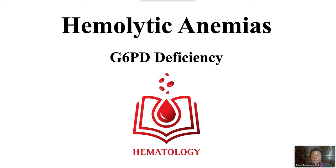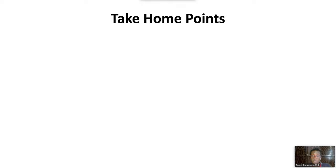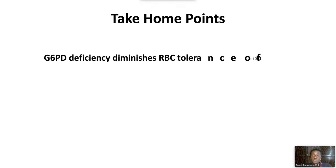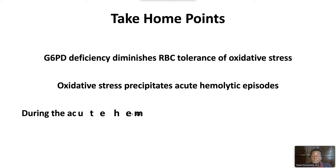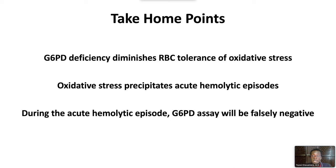Welcome to Hemolytic Anemias, G6PD Deficiency. We will discuss the following take-home points: G6PD deficiency diminishes red blood cell tolerance of oxidative stress. Oxidative stress precipitates acute hemolytic episodes. During the acute hemolytic episode, the G6PD assay will be falsely negative.